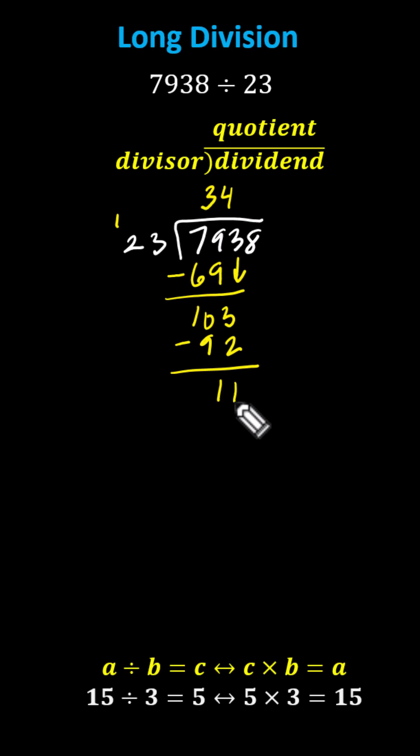And now I bring down the last digit in the dividend, which is the eight, and repeat the process. We now determine how many 23s there are in 118. Let's try five.